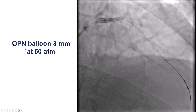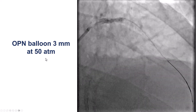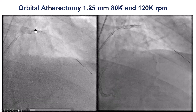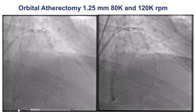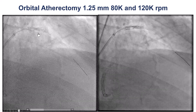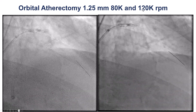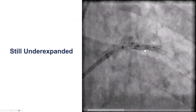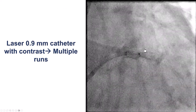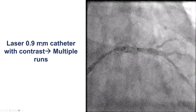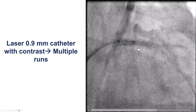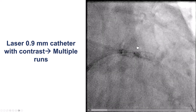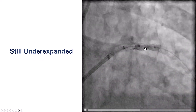We went straight to the OPN balloon — a 3 mm balloon inflated up to 50 atmospheres — but unfortunately, no expansion. We then decided to do orbital atherectomy, performing multiple passes going very slowly at both 80,000 rpm and 120,000 rpm, but despite that, we still did not have expansion within the stent. We then used laser with simultaneous contrast injection: a 0.9 mm laser with multiple passes, injecting contrast while activating the laser at 80 mJ/80 Hz, but once again, we did not achieve expansion of the LAD stent.